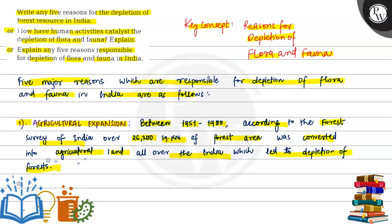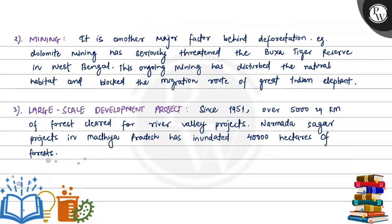The second point is mining. It is another major factor behind deforestation. For example, dolomite mining has seriously threatened the Baksa Tiger Reserve in West Bengal. This ongoing mining has disturbed the natural habitat and blocked the migration route of the great Indian elephant.